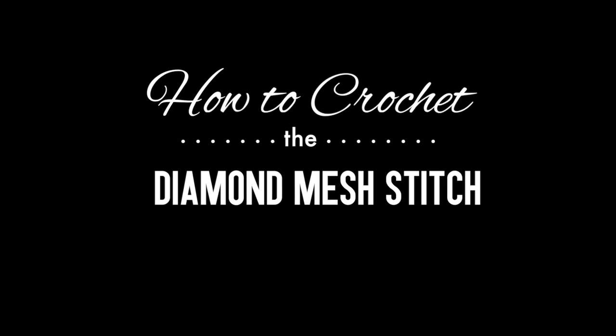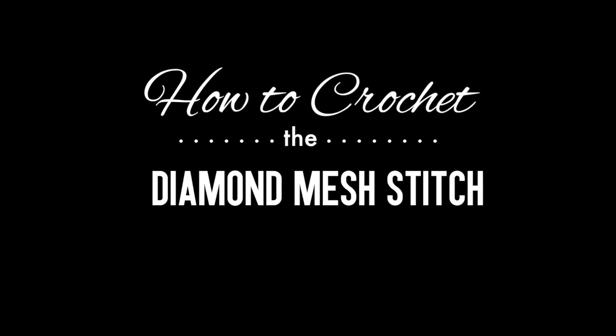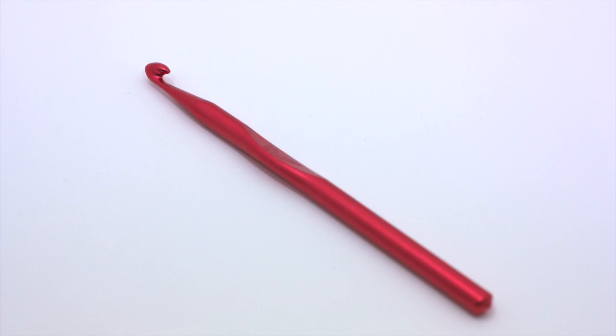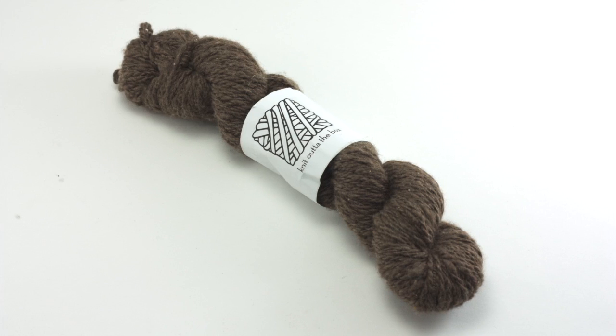How to Crochet the Diamond Mesh Stitch. For this tutorial you will need a crochet hook and a ball of yarn. Special thanks to our sponsor Knit Out of the Box for providing today's yarn. Today we are using their 100% Fairtrade Handspun Afghani Cashmere in the color dark brown.